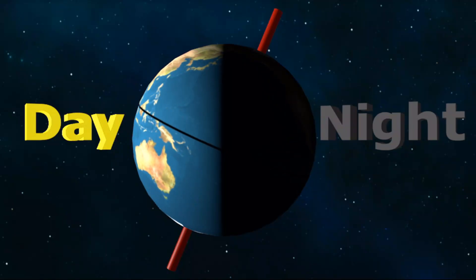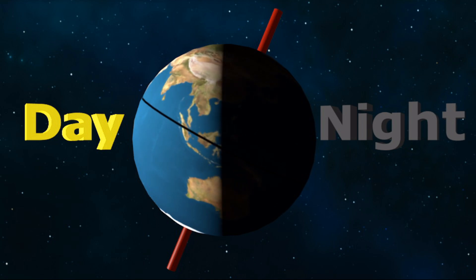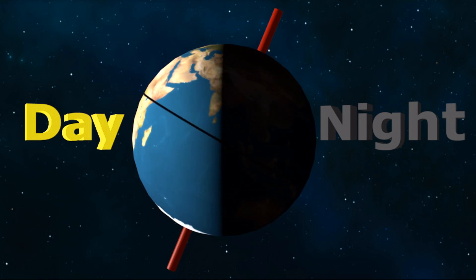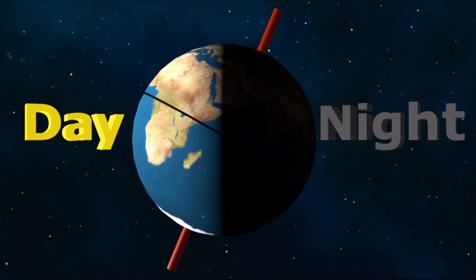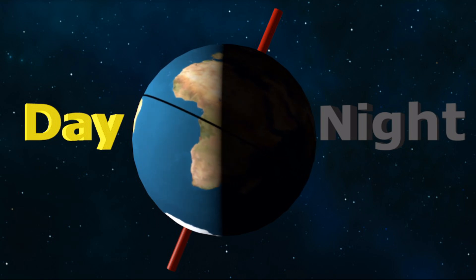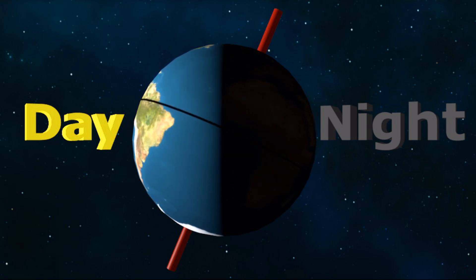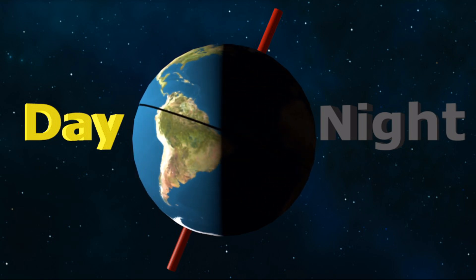The rotation of the Earth causes the day-night cycle. The Sun only shines on half the Earth at a time. As we rotate through the sunlight, it's daytime. And as we rotate through the dark, it's nighttime.